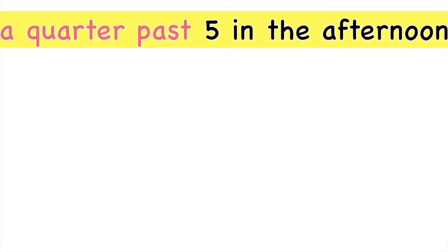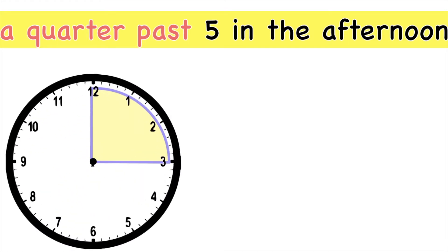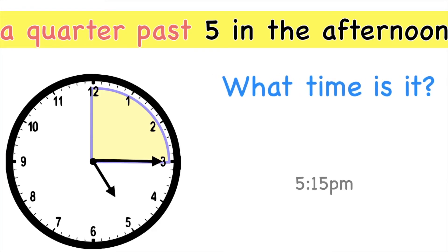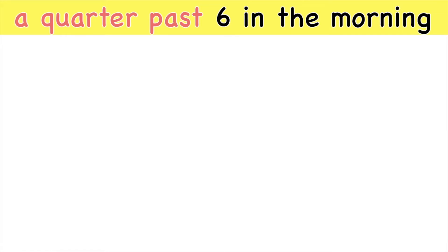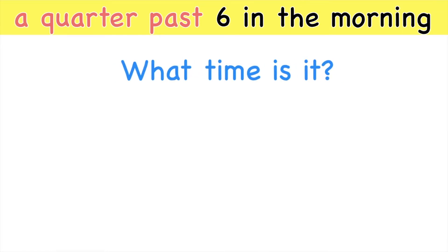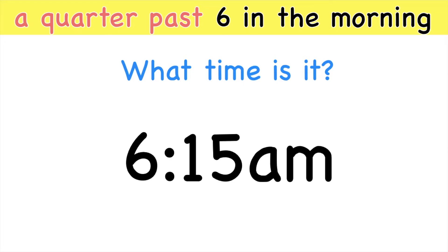How about if you have this? A quarter past 5 in the afternoon. What time is it? This is 5 o'clock. Let's count how many minutes pass: 5, 10, 15. It's 5:15 p.m. How about a quarter past 6 in the morning? Good job! It's 6:15 a.m. Always remember, when you see the word quarter past, that is 15 minutes after.